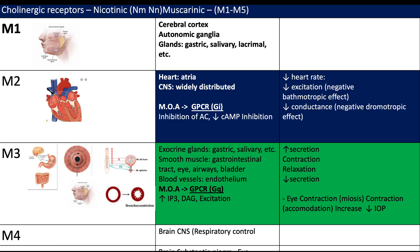Cholinergic receptors can be split into nicotinic and muscarinic. Nicotinic receptors include NM and NN: NM found in the CNS and NN mainly at the skeletal motor end plate. The muscarinic receptors highlighted are M1, M2, and M3. There are also M4 and M5 found in the CNS but they are less important. M1 is mainly located in the gastric glands, salivary, and lacrimal glands. M2 is mainly in the heart.